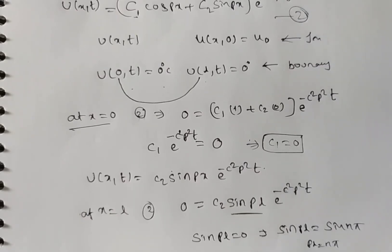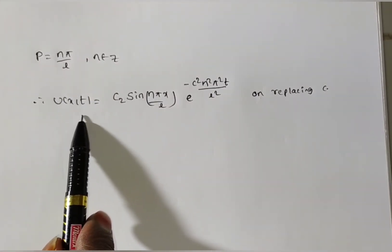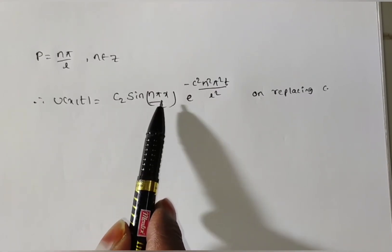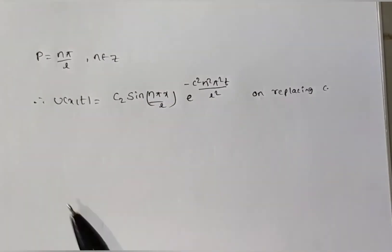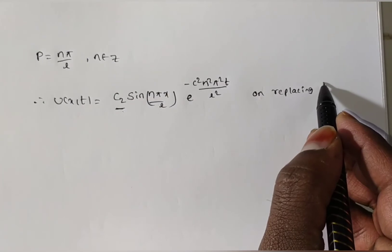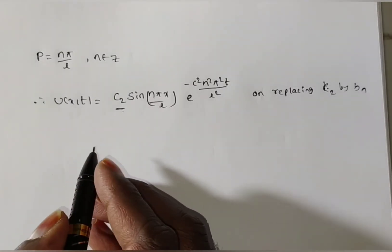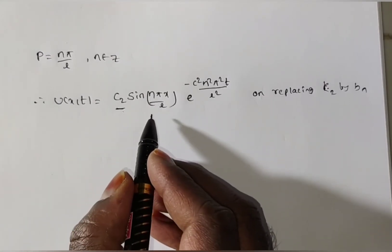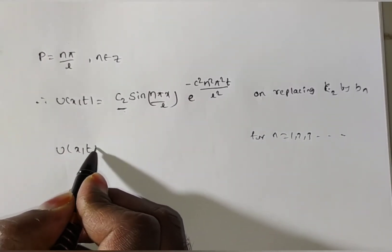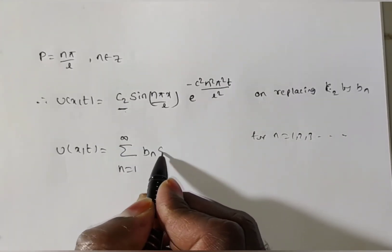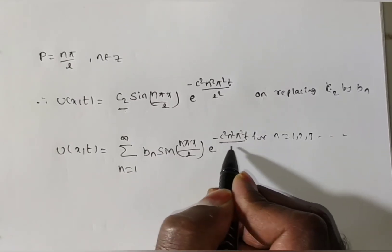Substituting P = nπ/L into the solution, U(X, T) = C₂·sin(nπX/L)·e^(−C²n²π²T/L²). Replacing C₂ by Bₙ and summing over all n to get the most general solution: U(X, T) = Σ(n=1 to ∞) Bₙ·sin(nπX/L)·e^(−C²n²π²T/L²).